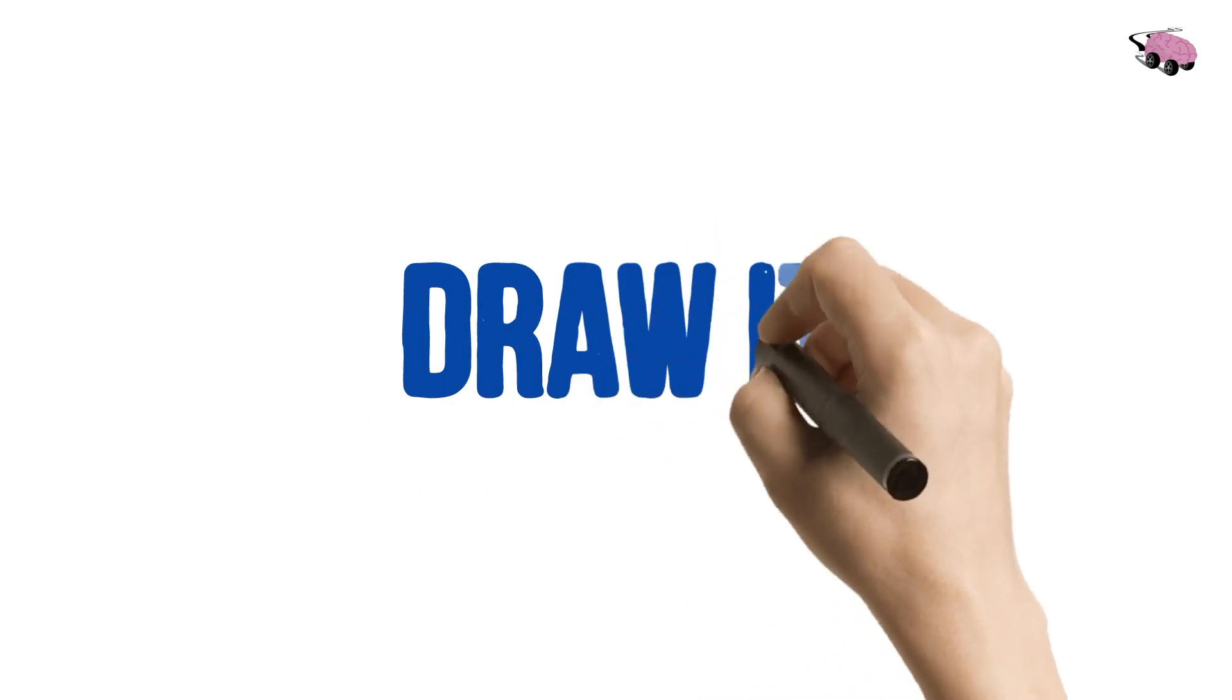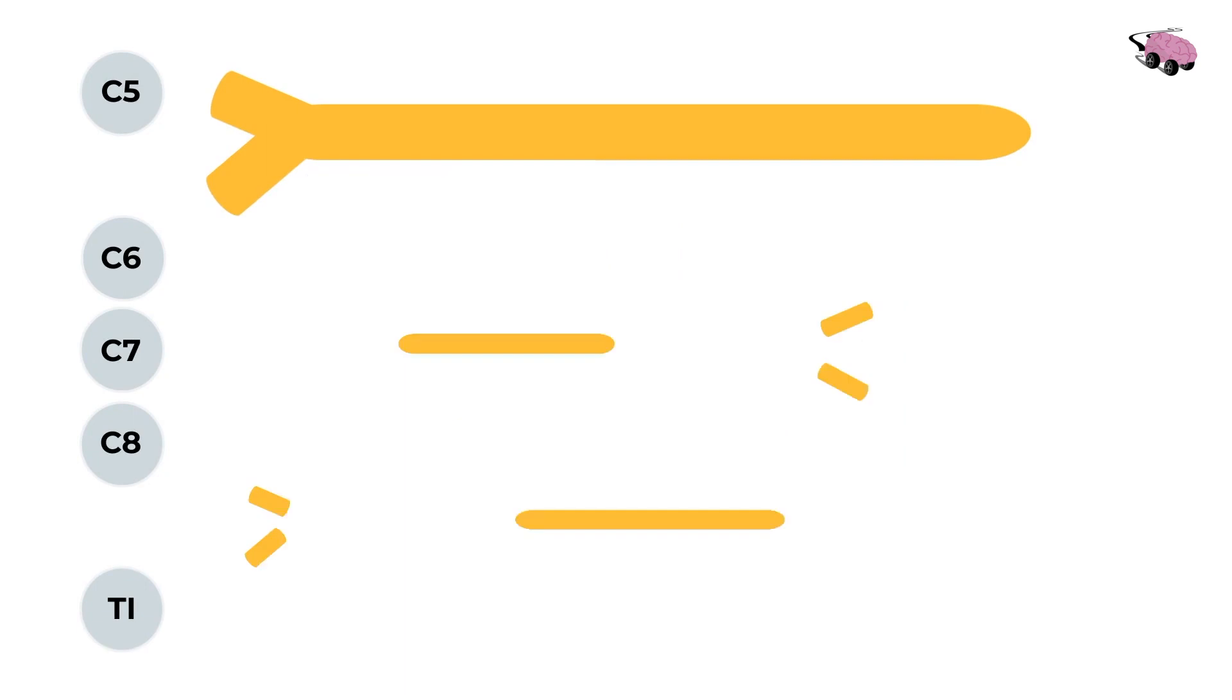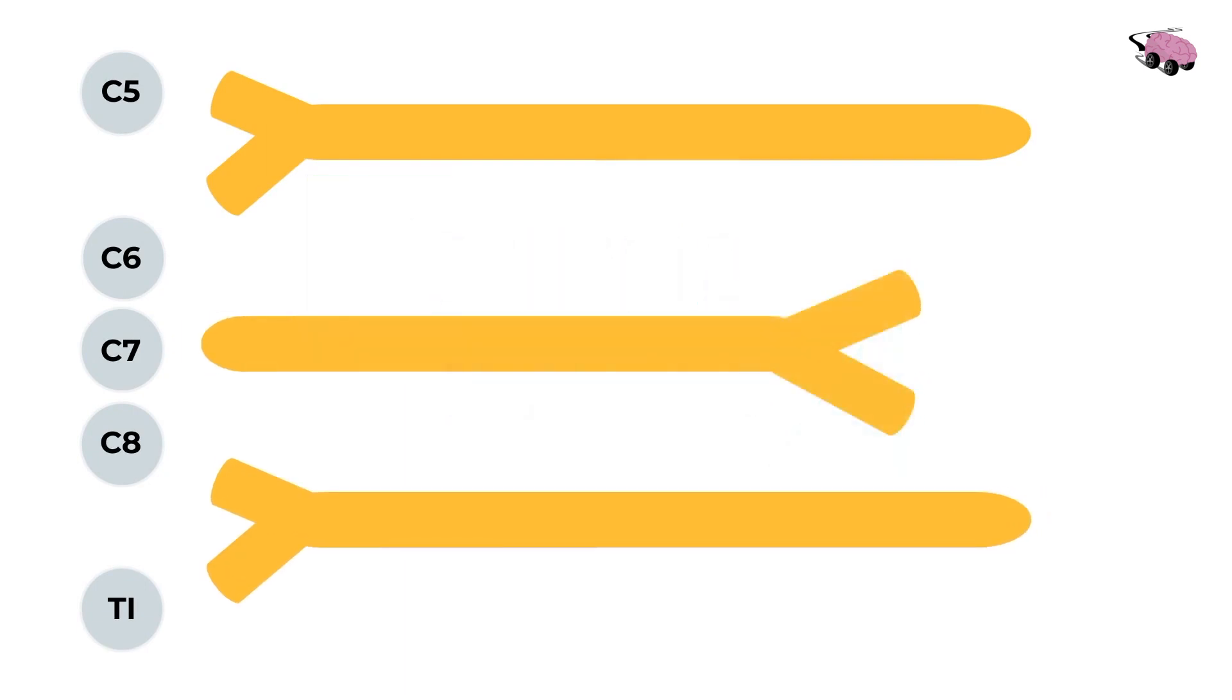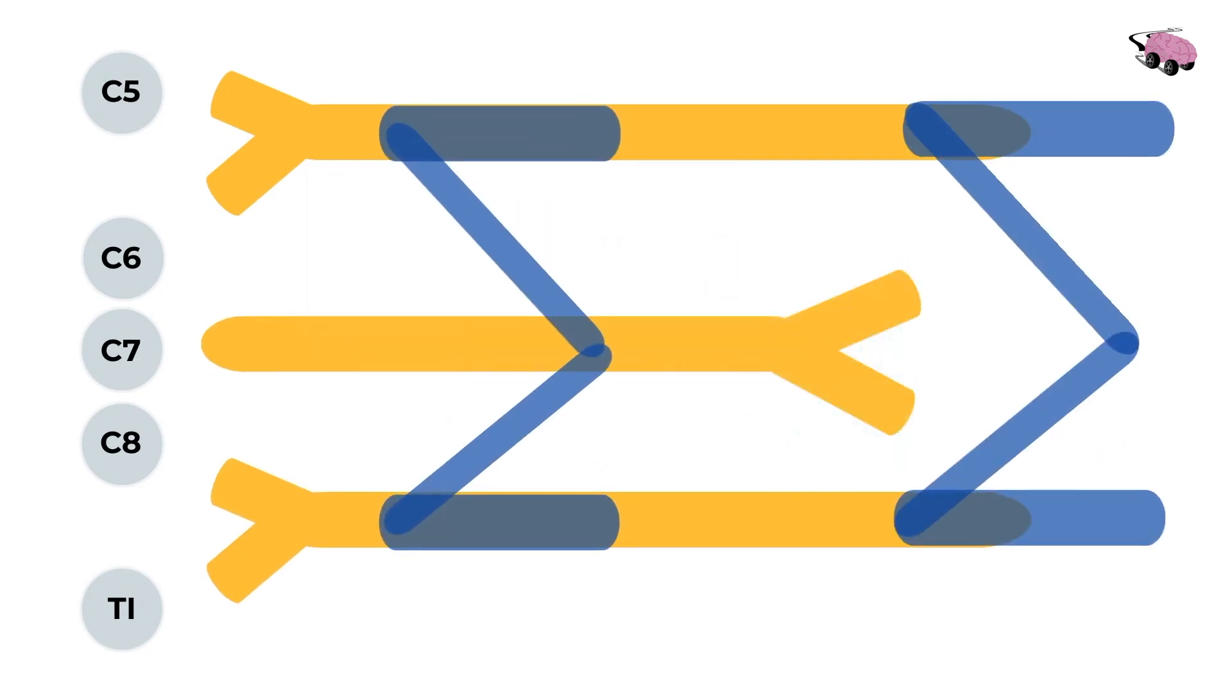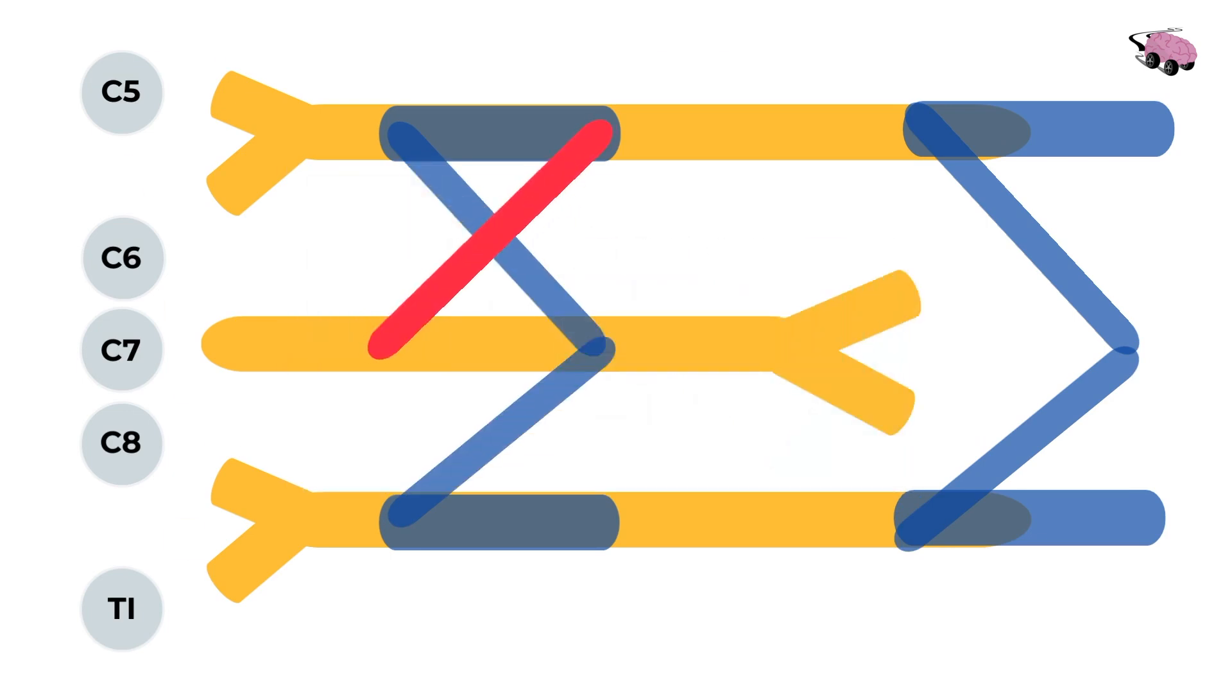So let's draw it. First list the five root values. Now let's draw in three Y's and two E's. Finally let's draw in a letter X. And that's all to it. You drew the brachial plexus.